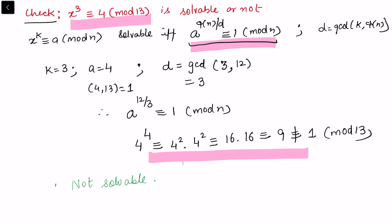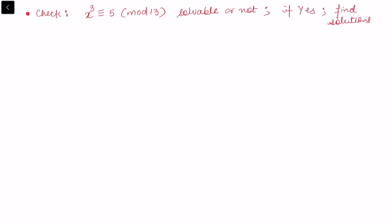We can directly check the solvability condition first and conclude from it. If a congruence satisfies the conditions, we can say it is solvable and use the method of indices (as explained in the last video) to find the solution. Let's try one more problem: x³ ≡ 5 (mod 13). Here a = 5, n = 13, k = 3.